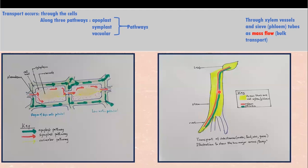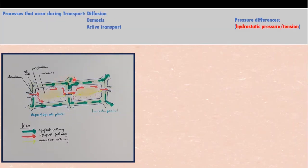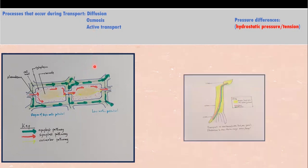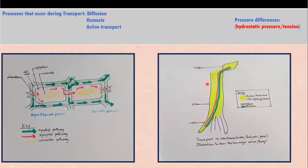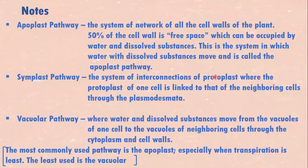We'll discuss xylem and phloem transport in detail in our next lesson. In areas that are not xylem and phloem, the processes that transport substances are diffusion, osmosis, and active transport. Whereas in the xylem and phloem, substances are transported based on pressure differences — the pressure at the top of the xylem vessels in the leaf is very different from the pressure lower down, and because of these pressure differences, substances flow through the xylem and phloem. So we see two different blocks with two different ways of transporting substances.